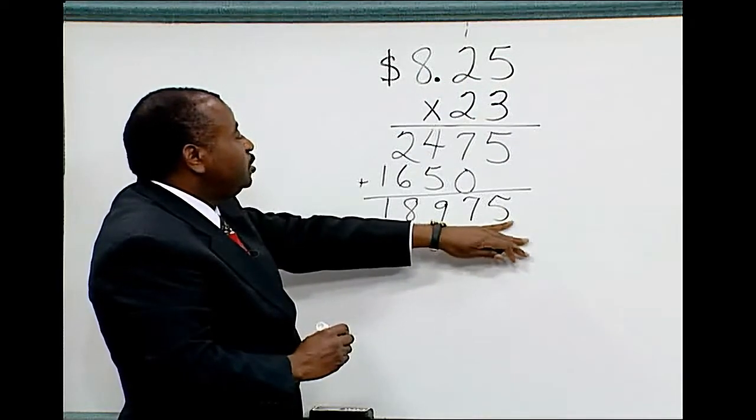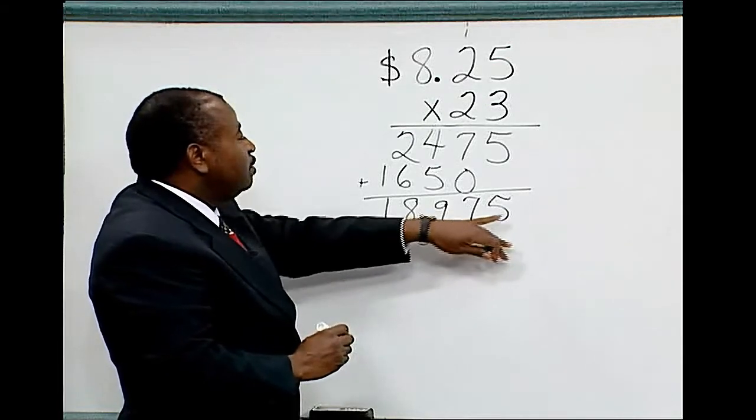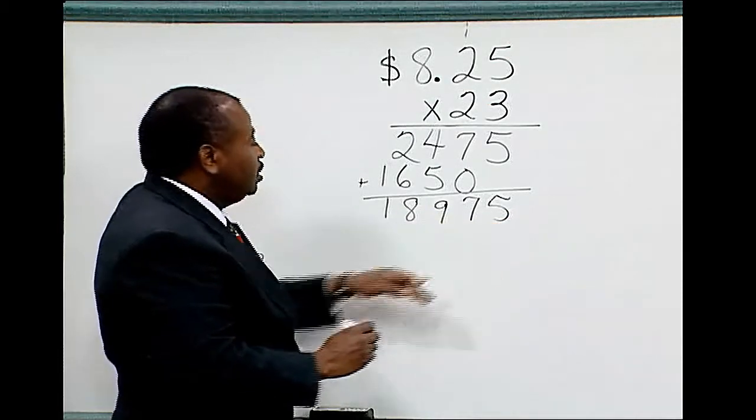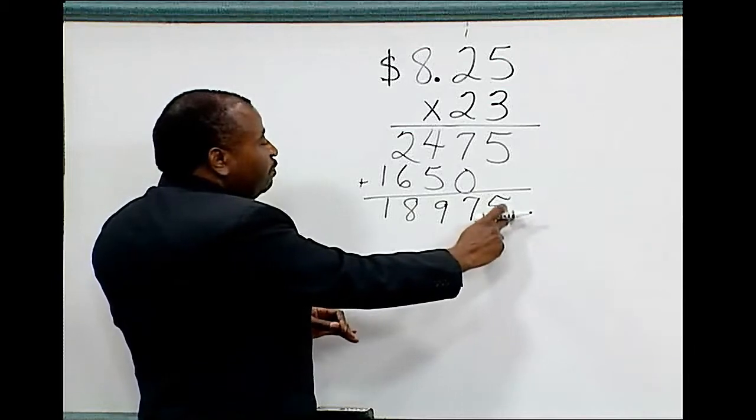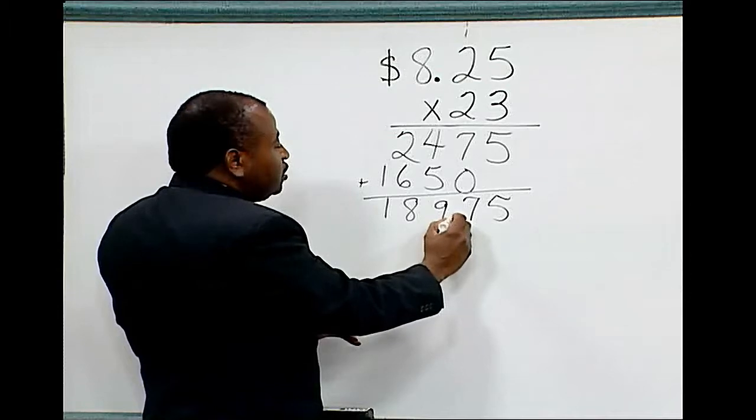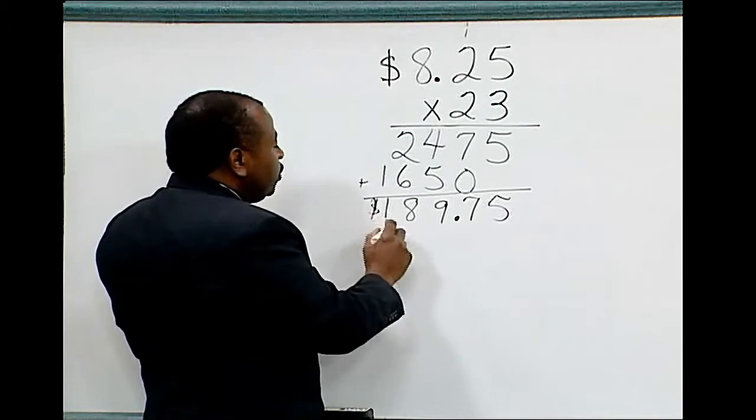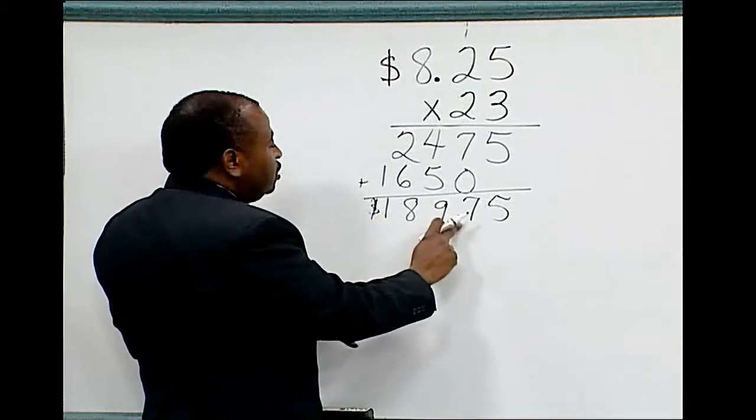Therefore, we must place the decimal in our answer two places from where the decimal was originally located. We start counting from the right of the number. 1, 2, and place the decimal point in our answer. The correct answer is $189.75.